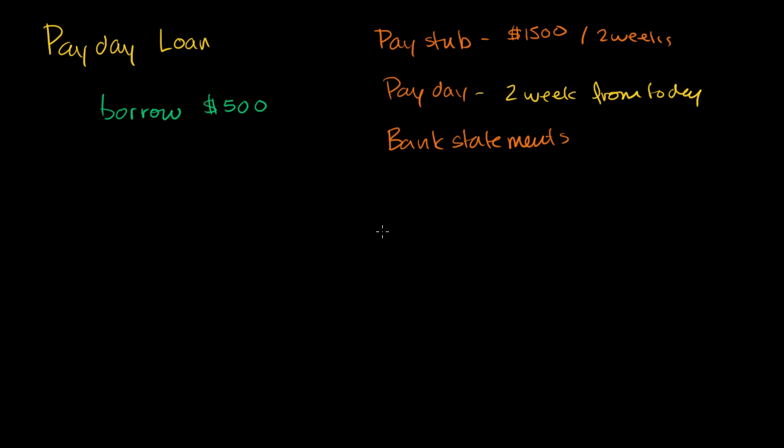So maybe you make $1,500 every two weeks. So they like to see that. Maybe your payday is two weeks from the day that you're borrowing the money. And then your bank statement shows that your bank kind of goes up $1,500, then you pay the rent and the food, then it goes back close to zero, then it goes up to $1,500. But they want to see that this $1,500 is hitting periodically. And they say, you know what we're going to do? We're going to give you the $500 today.